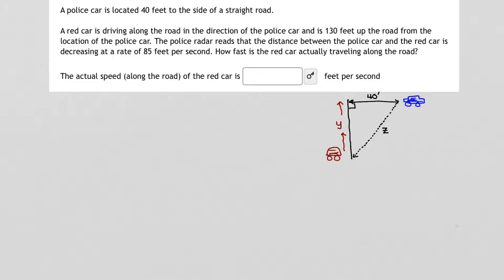Putting this all together with the information in the problem, let's see what we're actually solving for. The problem asks, how fast is the red car actually traveling? In other words, how fast is this distance that I've labeled Y changing? In other words, what is dy/dt? That's what the problem is asking for. And when do we want to know that specific speed? We want to know that when the car is 130 feet up the road from the police car. At that particular instant, we're looking for how fast the car is traveling. So that means we want to find dy/dt when Y is 130 feet.